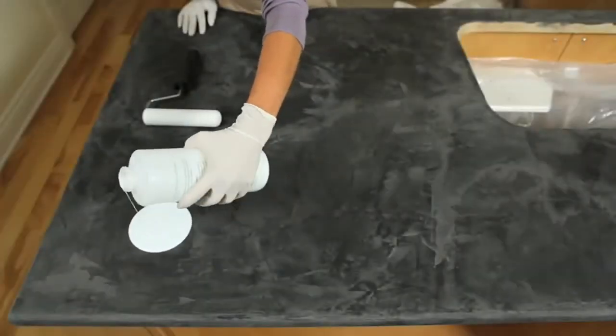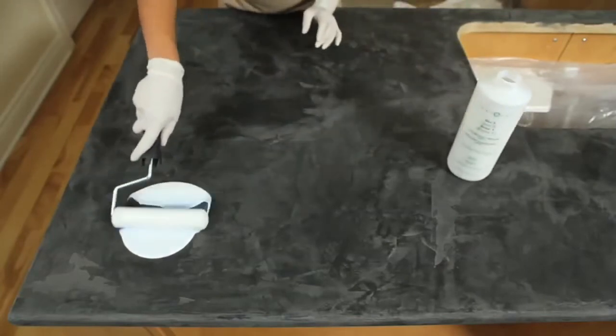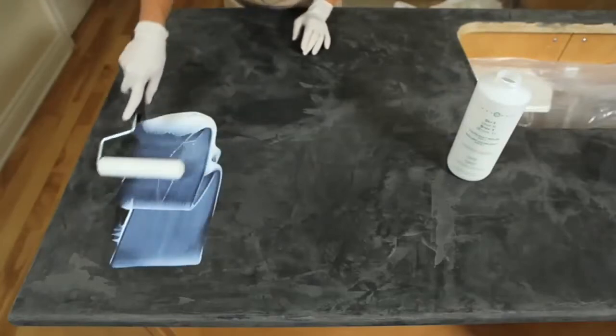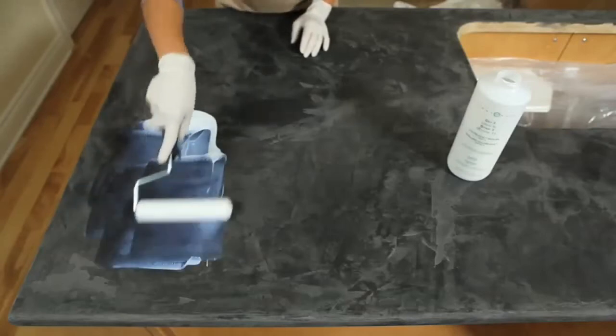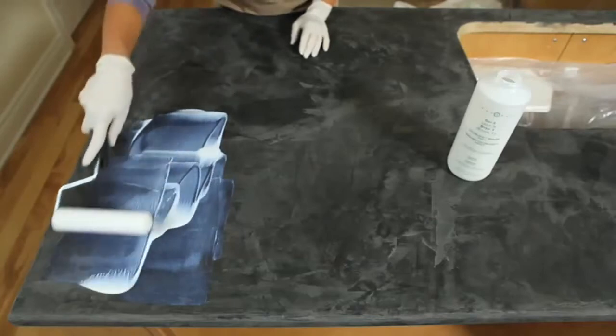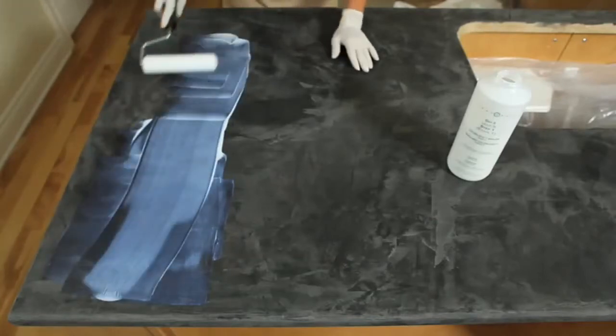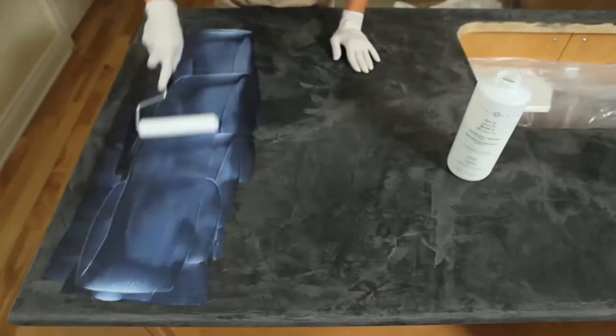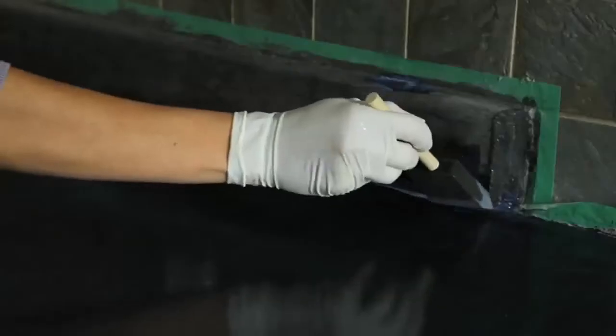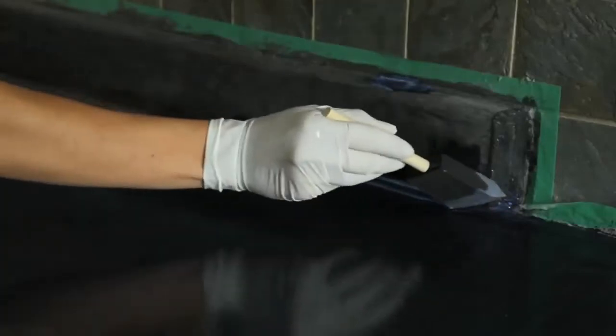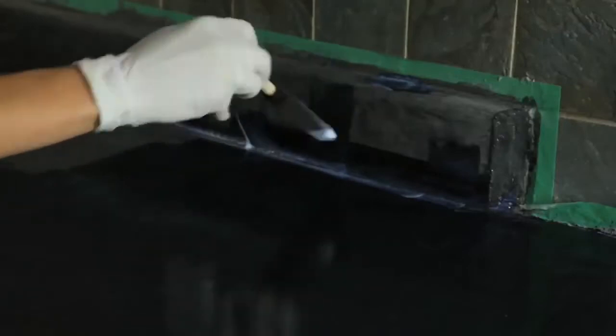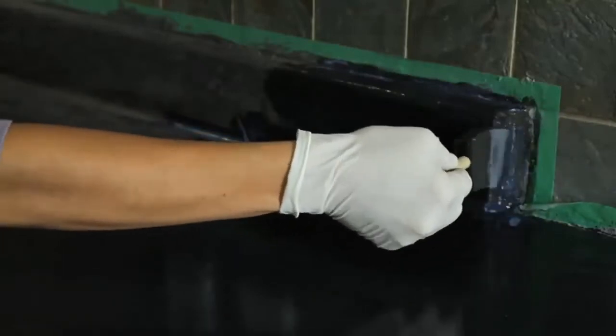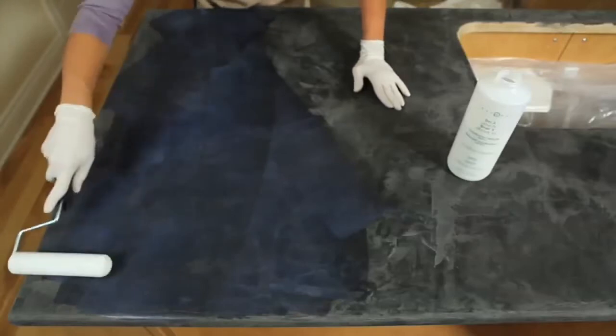Starting at one end of the countertop, pour out a small puddle of sealer onto the countertop. Use a foam roller to evenly spread the sealer across the countertop surface. You can use a small foam brush for the back corners, backsplash, and front edge. Apply light pressure while rolling out the sealer.